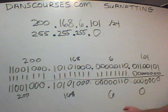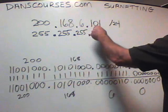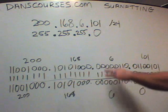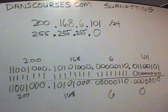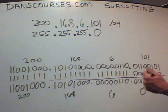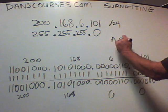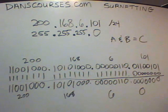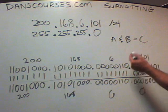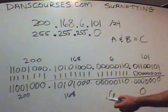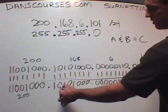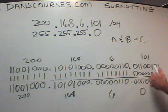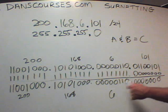So it took the IP address 200.168.6.101 and ANDed it with the netmask 255.255.255.0. The ANDing process is like A and B both need to be true for C to also be true — you could just call it multiplication: 1 times 1 equals 1, 0 times 1 equals 0. If you AND or multiply the binary together, you will get the network.